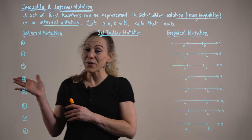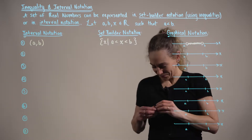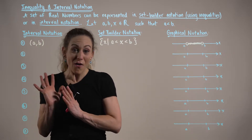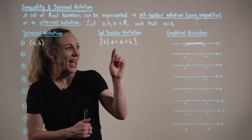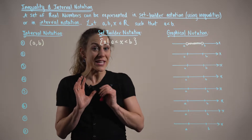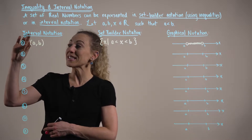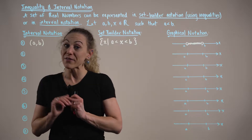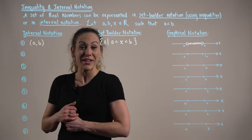Our first set of real numbers is the set of all x values that are strictly greater than a and strictly less than b, so we are excluding the endpoints. In interval notation, the parentheses imply that x can get infinitely close to these numbers but will never equal them. We call this type of interval an open set.